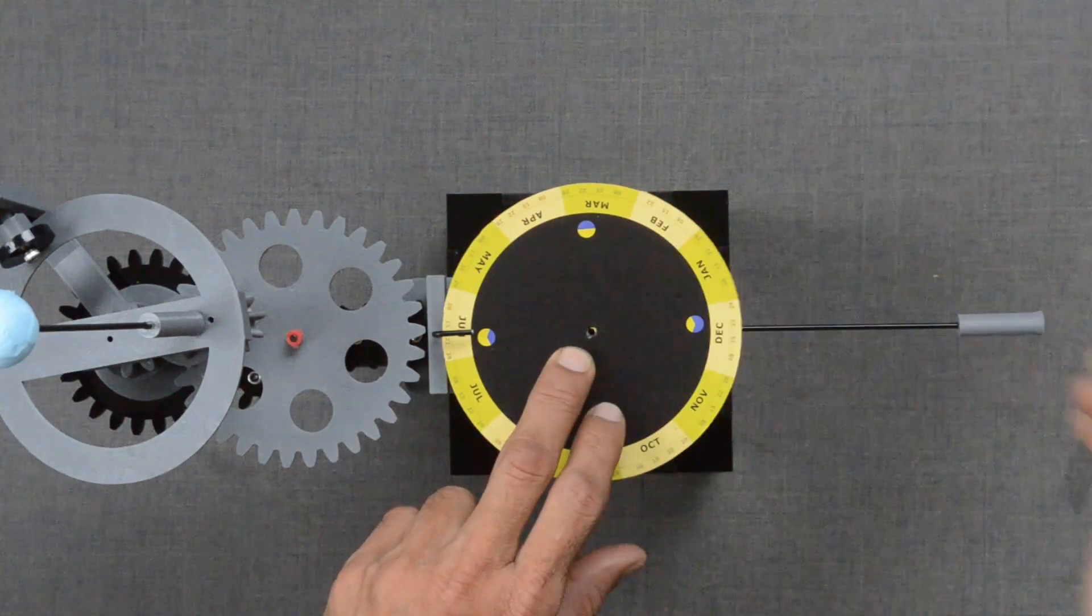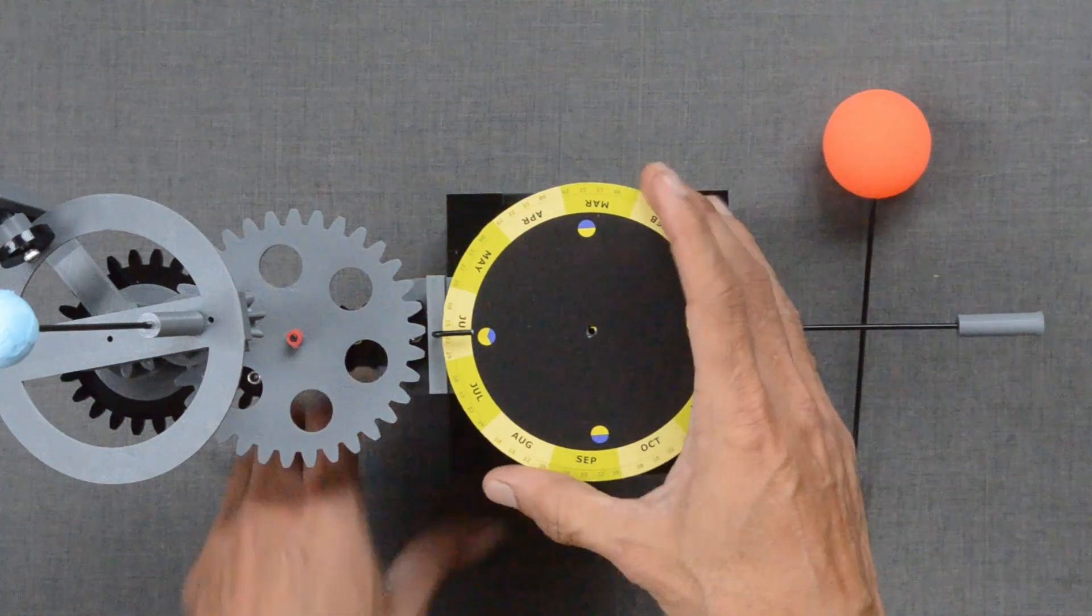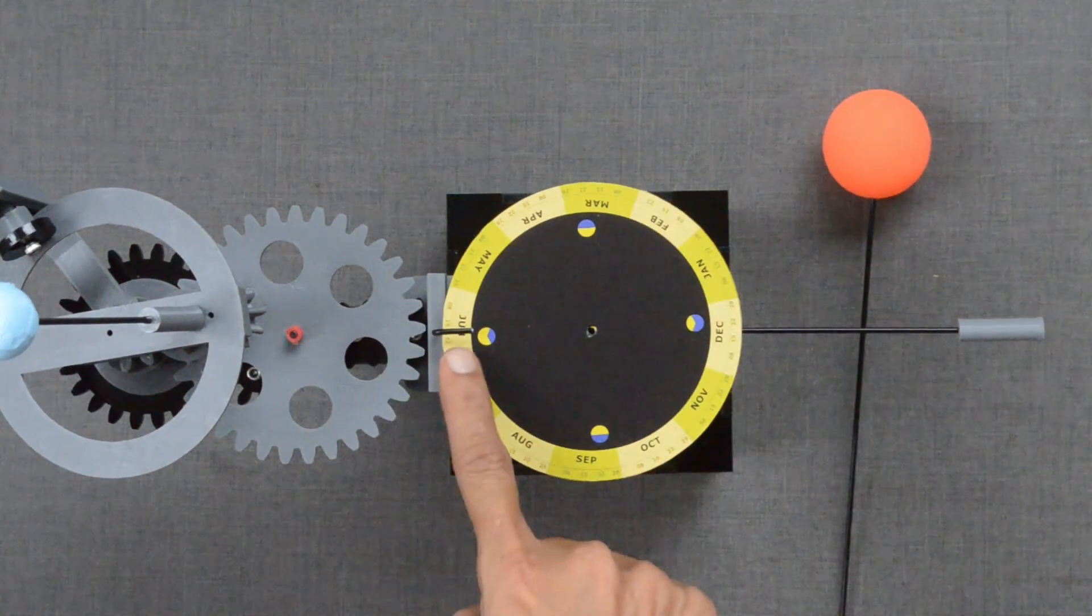Let us look at the dial. It has English calendar months with dates marked on it.